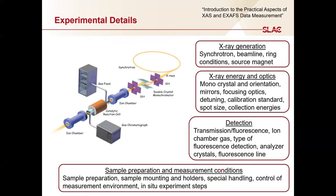Finally, you should include details on sample preparation and measurement conditions. In addition to how you prepared the sample, you should describe the sample holder, both the material and the thickness. Did your sample require special handling — for instance, if it was air-sensitive and prepared in a glove box, how did you transfer it to the beamline? What was the measurement environment — did you measure at low temperatures in a cryostat, or do an in-situ measurement with a controlled sample environment? And if you were doing an in-situ experiment, describe the steps and what type of measurement you did at each step.